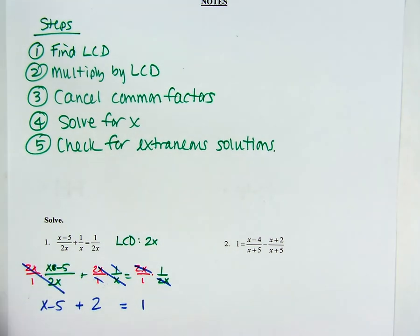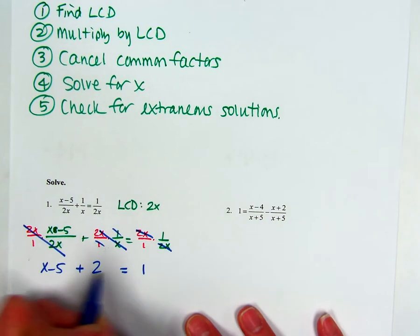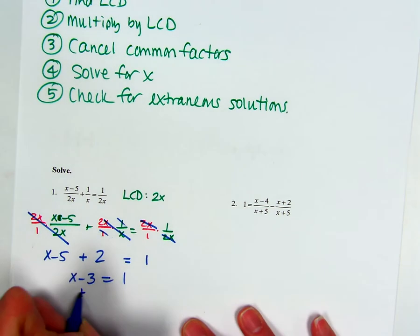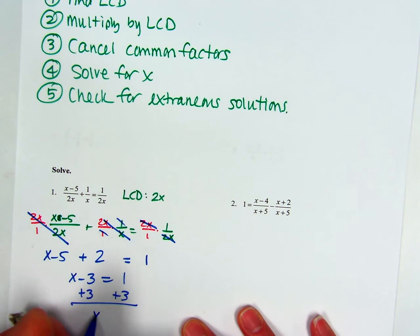All right, so now we've just got a basic equation. I would say add together your like terms. So you've got X minus 5 is equal, X minus 5 plus 2, so that's X minus 3 is equal to 1. And when you add 3 to both sides, you get X equals 4.